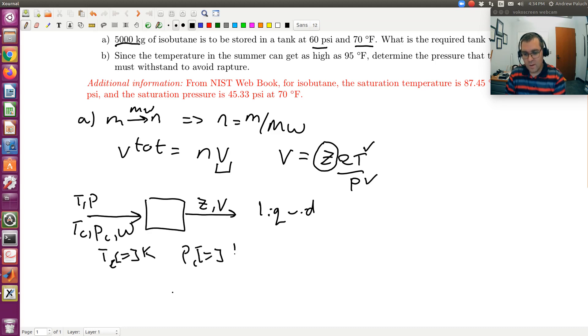So the first thing you'll need to do is take our pressure, which is in psi, and convert that to bars. And we'll take our temperature, which is in degrees Fahrenheit, and convert that to Kelvin.